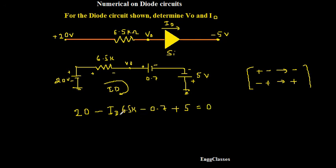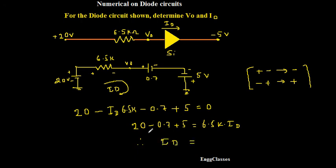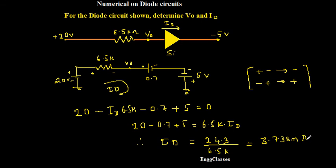Solving this equation for ID: taking ID to the right-hand side, I am left with 20 minus 0.7 plus 5 equals 6.5 K into ID. Therefore ID equals 24.3 divided by 6.5 kilo ohm, which gives 3.738 milliamps. So this is the value of the current ID.